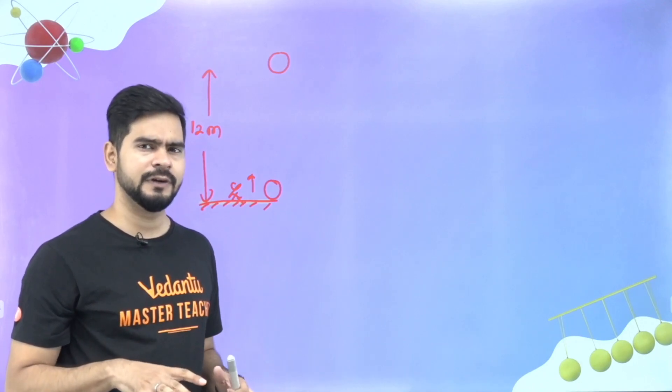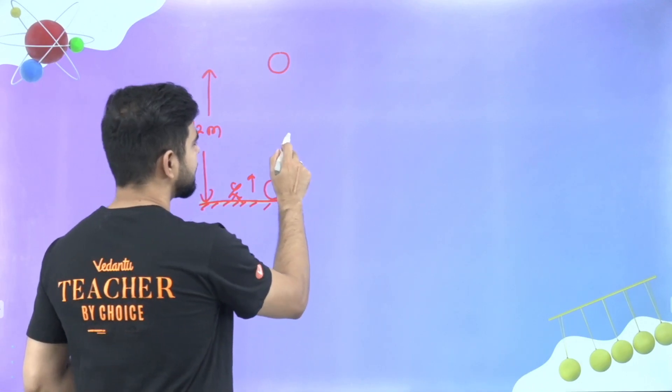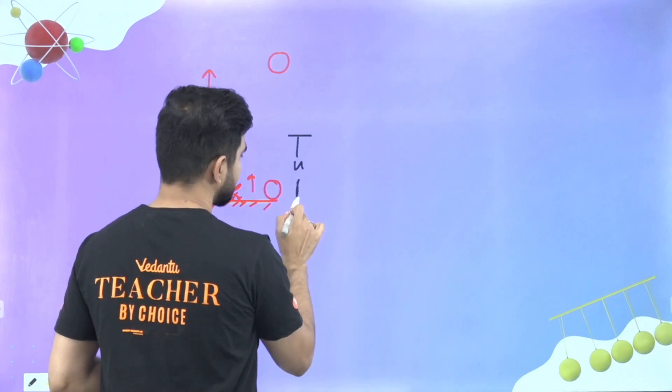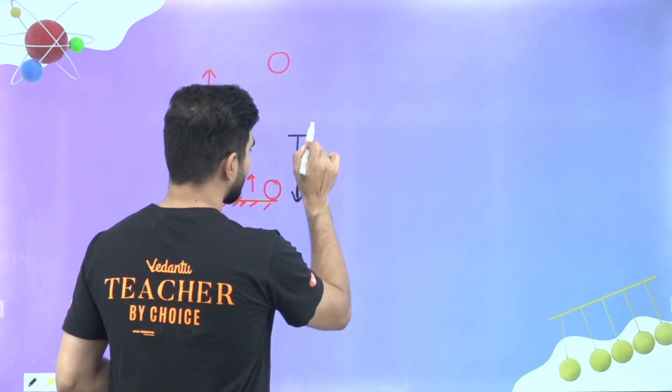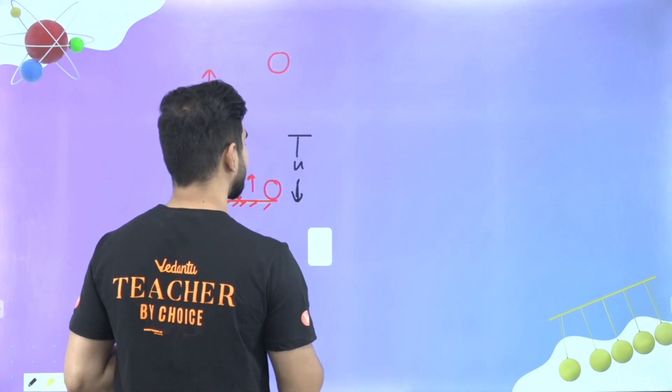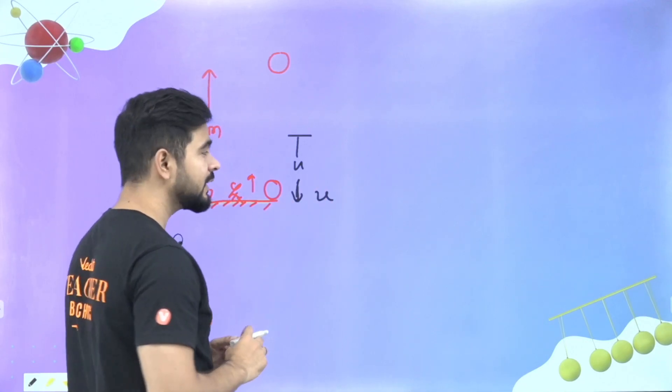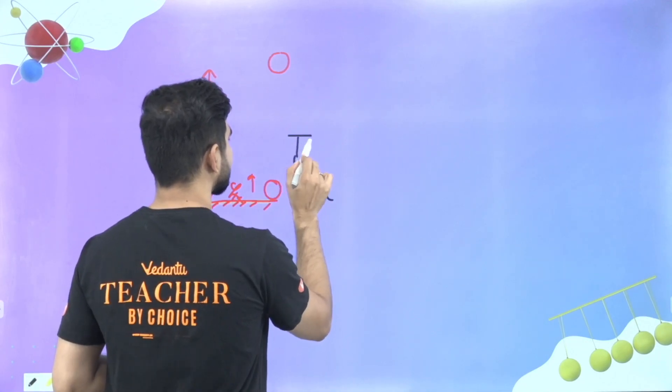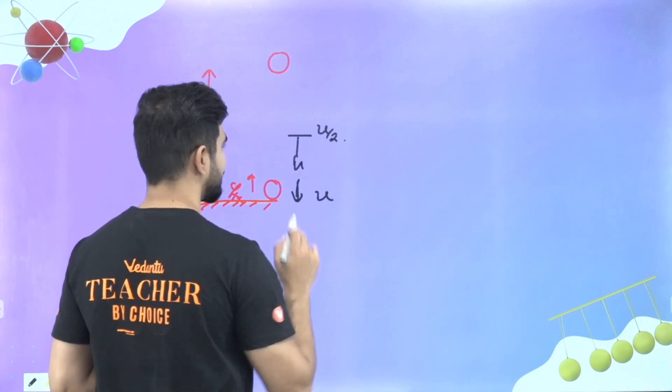And we have to find at what height its velocity becomes one half of the initial one. That means initial is u. So at this height h, let us take its velocity as u by 2.